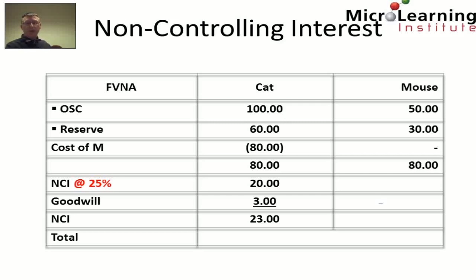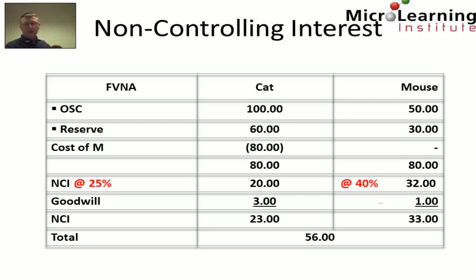For Mouse, the ordinary share capital is $50,000 and reserves are $30,000, giving fair value net assets of $80,000. The non-controlling interest holds 40% of Mouse, so 40% of $80,000 = $32,000. Adding goodwill of $1,000 recognised in the non-controlling interest of Mouse gives a carrying amount of $33,000. The total non-controlling interest in the Dog group is $23,000 plus $33,000 = $56,000.